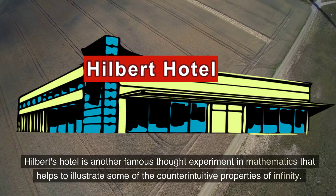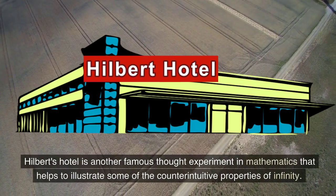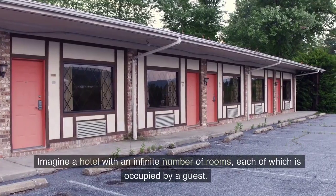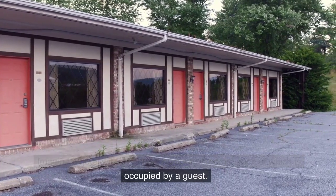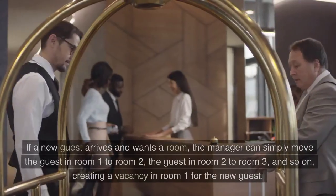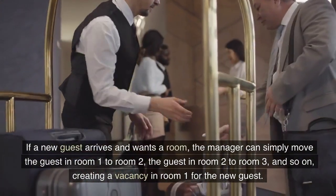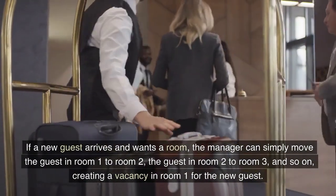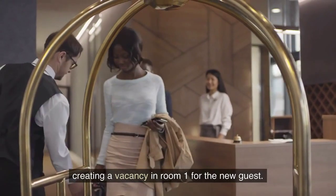Hilbert's Hotel is another famous thought experiment in mathematics that helps to illustrate some of the counterintuitive properties of infinity. Imagine a hotel with an infinite number of rooms, each of which is occupied by a guest. If a new guest arrives and wants a room, the manager can simply move the guest in room 1 to room 2, the guest in room 2 to room 3, and so on, creating a vacancy in room 1 for the new guest.